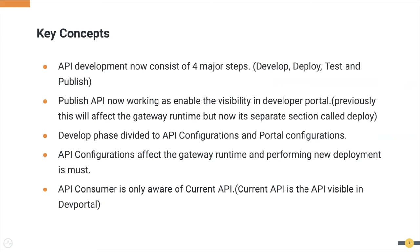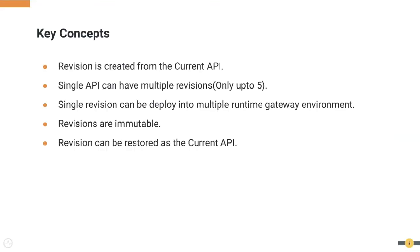Changes done to the API configuration section affect the runtime, hence performing a new revision creation and deployment is necessary to make the new changes affect the runtime API. Changes to the portal configuration section don't affect the runtime gateway — they will only affect the API visible in the dev portal. Revisions are created from the current API, which is considered the latest state. Currently, a single API can create up to five revisions, and after reaching the limit, you need to delete a stale previous revision to continue creating new revisions.